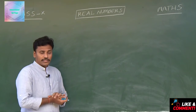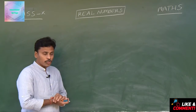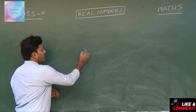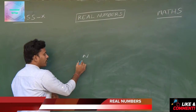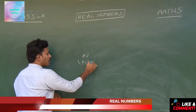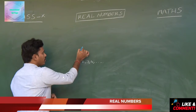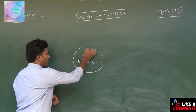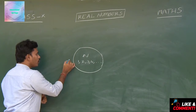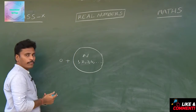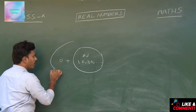Let us analyze the classification of numbers in another way, starting with naturals. Natural numbers are counting numbers like 1, 2, 3, 4, and so on. If you add 0 to the naturals, this new collection is termed as whole numbers.